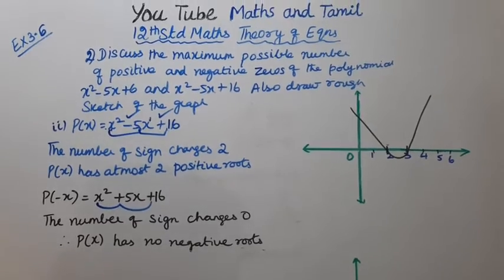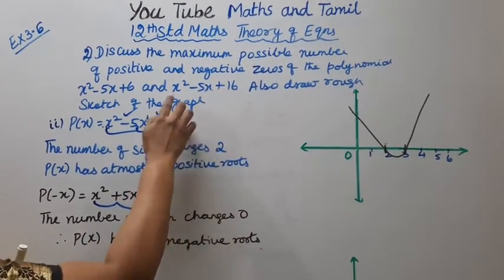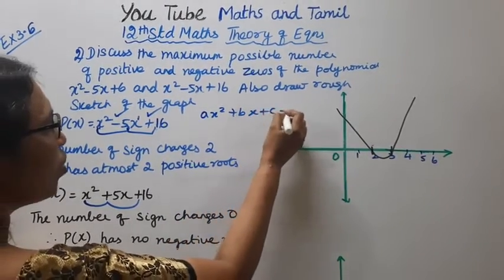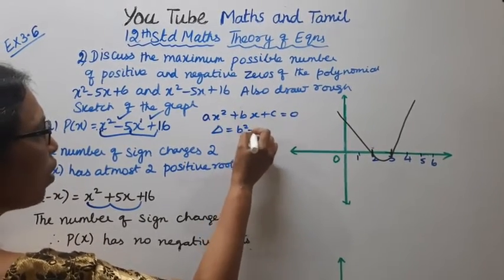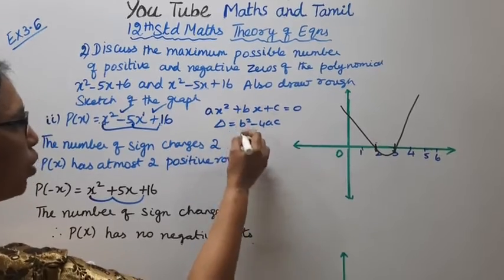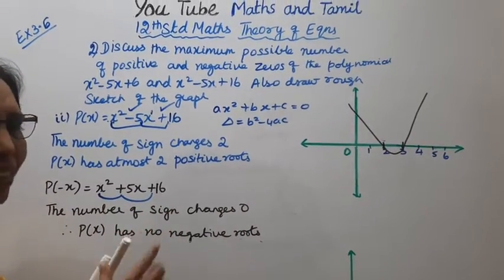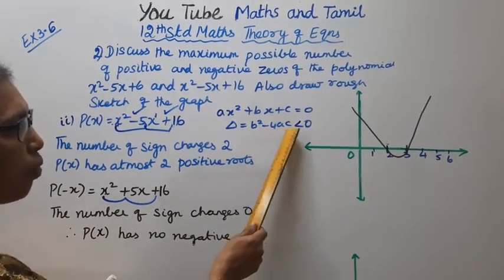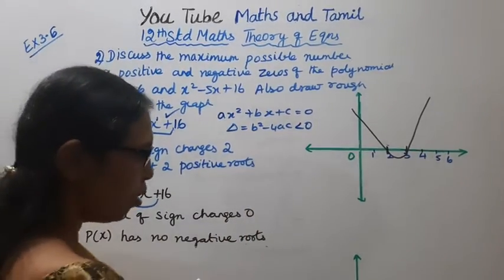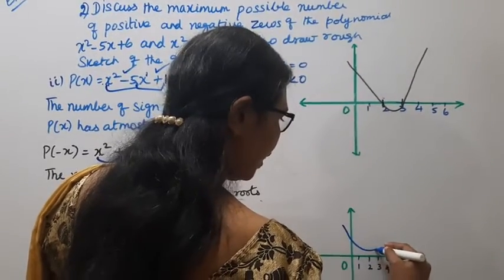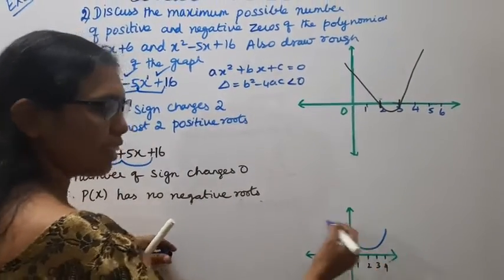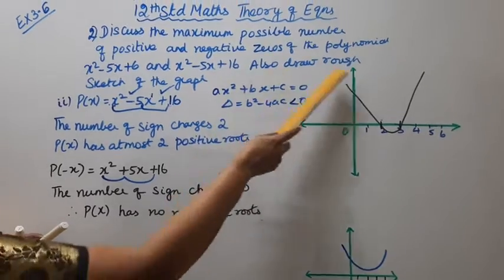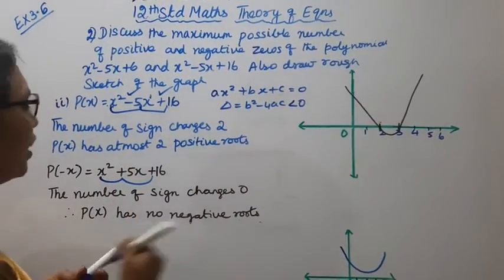We can try to factorize, but using the discriminant: delta = b² - 4ac. For x² - 5x + 16, delta = 25 - 64, which is less than 0. Therefore the roots are imaginary — the graph does not touch the x-axis. This is the graph for the second polynomial.